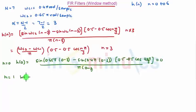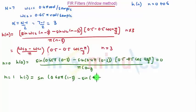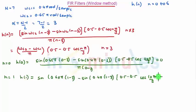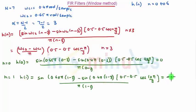When n is equal to 1, h(1) is equal to sin(0.65π·(1−3)) minus sin(0.4π·(1−3)), multiplied by 0.5 minus 0.5·cos(1·π/3), the whole divided by π·(1−3). That gives us minus 0.0556.